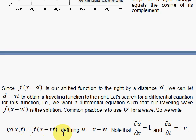I will call the function psi, since physicists like to call waves psi in optics and also in quantum mechanics. The wave function is called psi. I define u as x minus vt. And I note that the partial of u with respect to x is 1. The partial of u with respect to t is minus v.